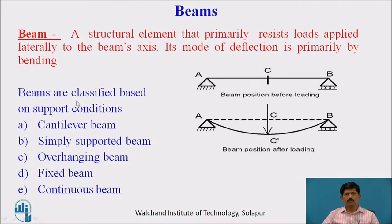Beams are classified according to support conditions: cantilever beam, simply supported beam, overhanging beam, fixed beam, and continuous beam. We are dealing with the cantilever beam.